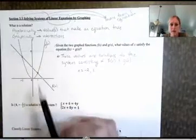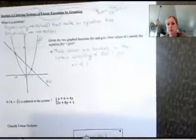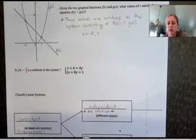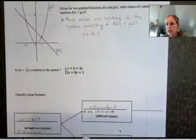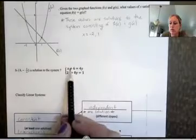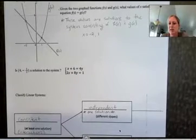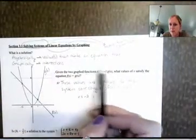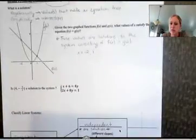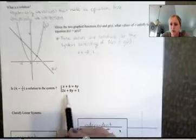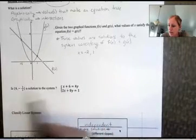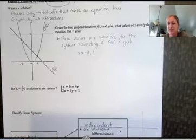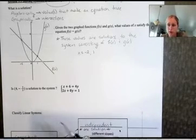A solution is an intersection when we're looking at more than one equation. The ones we're going to be solving will be composed of two lines. To check algebraically if a point is a solution, it has to make both equations true. So I'm going to substitute four in for x and negative one-half in for y in both equations. If it only works in one, it's not a solution to the system — it would only be a solution to that one line.